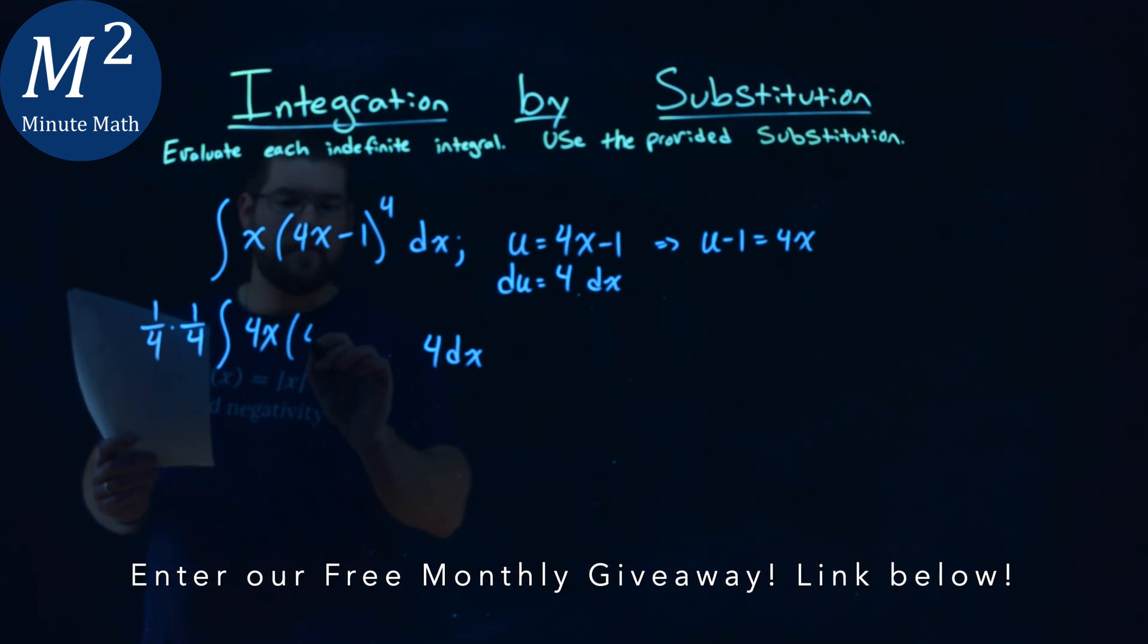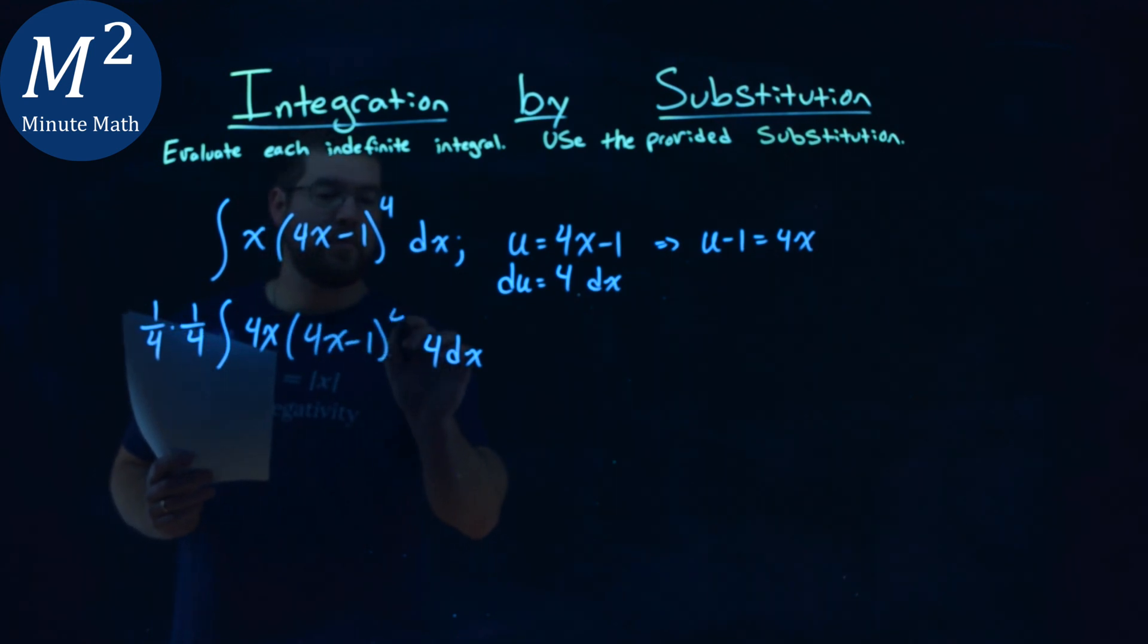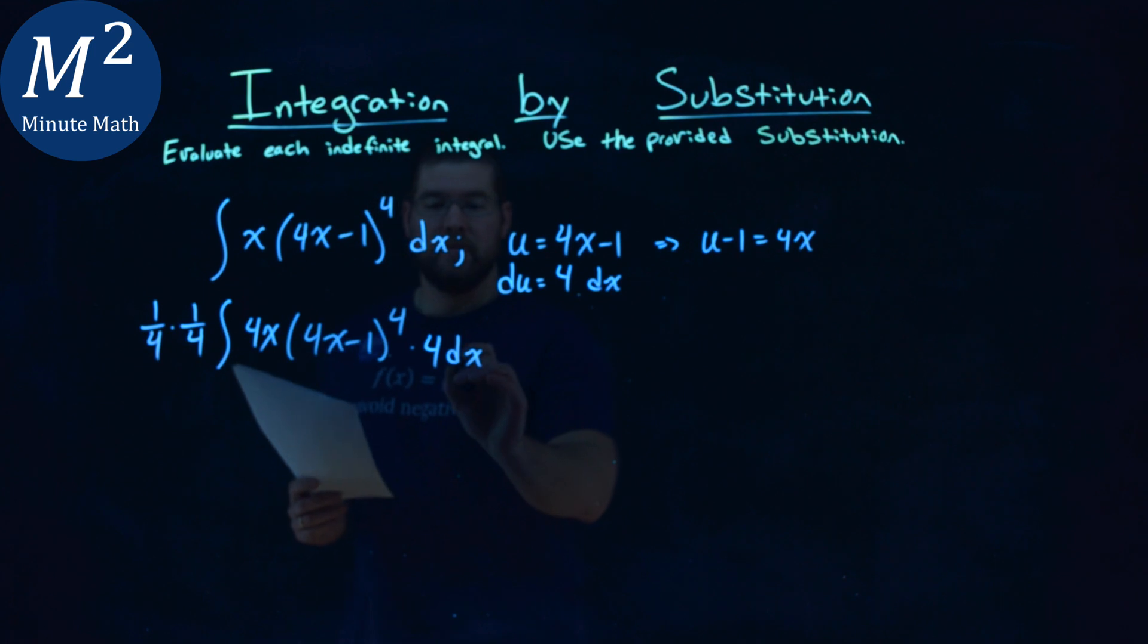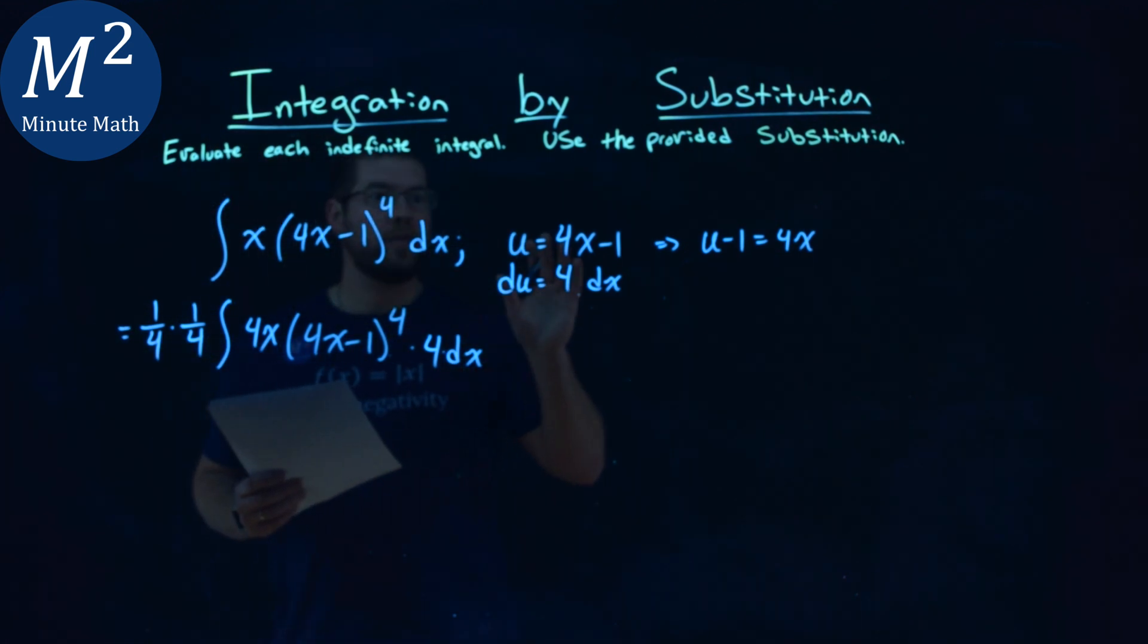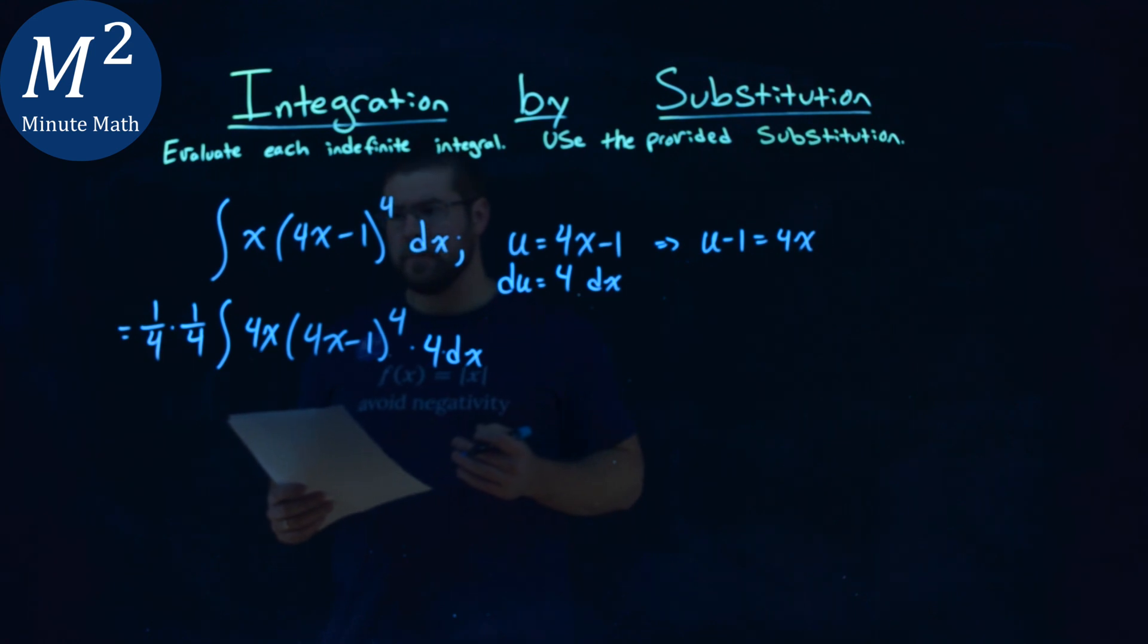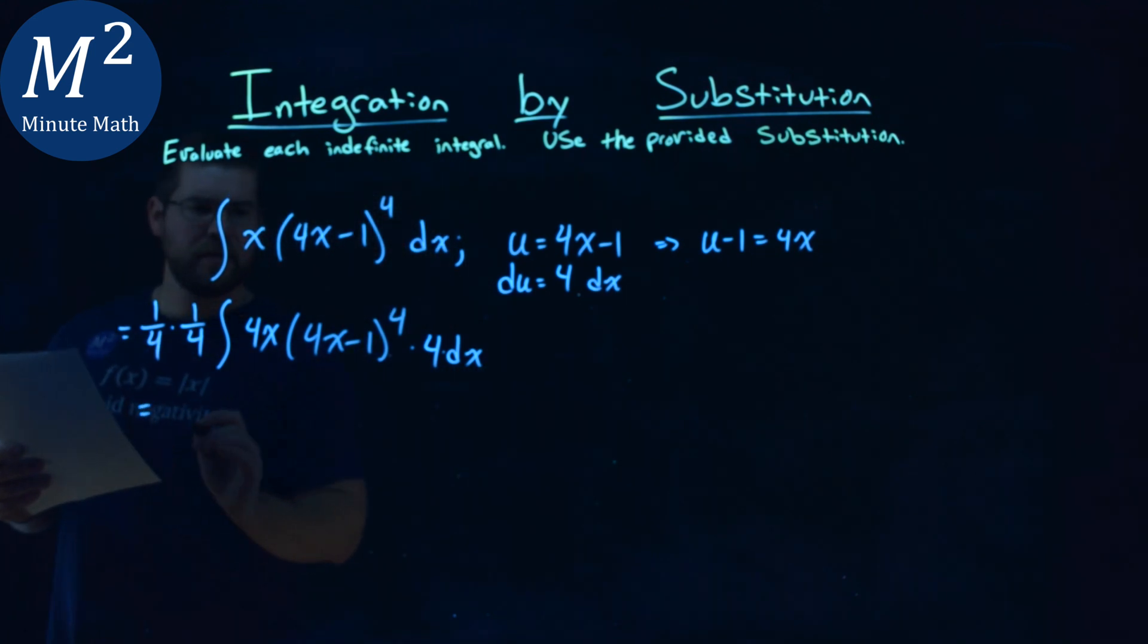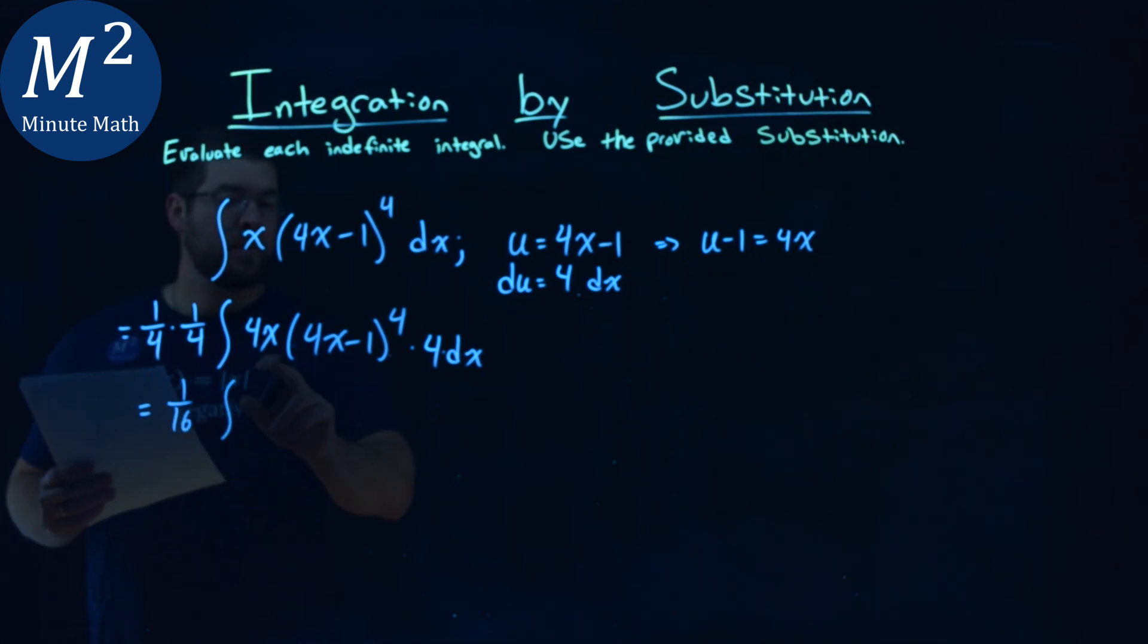From there, the inside's fine, so we have a 4x minus 1 to the 4th power, and we're multiplying that out. And so actually, we've set up our integral here to work for our u-substitution. So let's go simplify this out here and write it in terms of u. 1/4th times 1/4th is a 1/16th here, and then we have the integral.